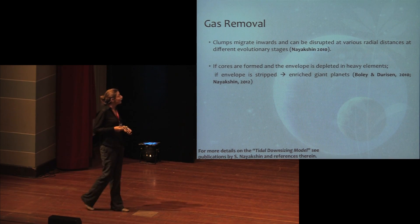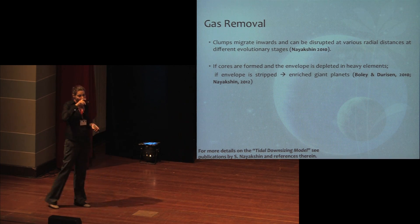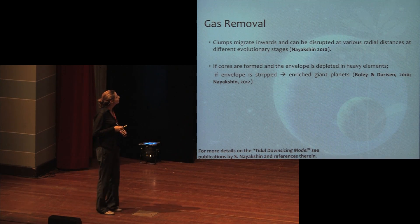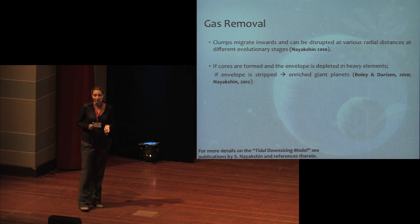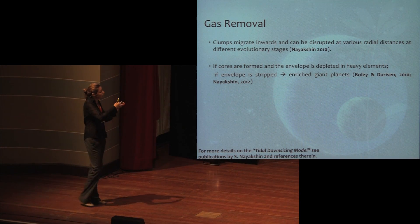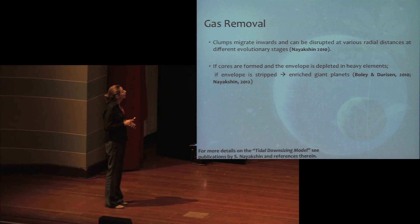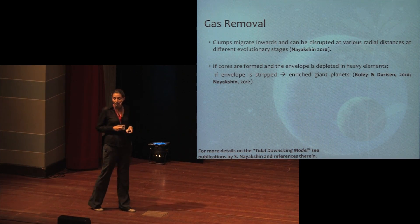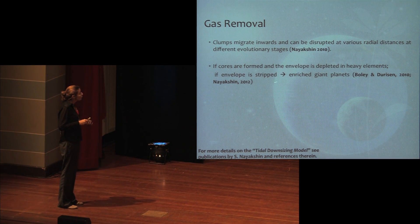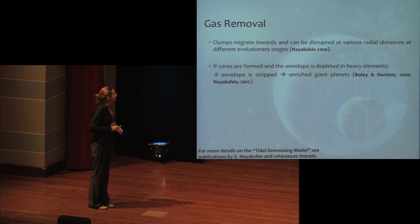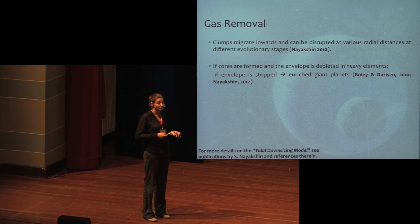Another enrichment mechanism in disk instability is gas removal: clumps migrating inward can lose some of their envelopes. If they manage to form a core during migration, the final planet will actually be enriched compared to the star, ending up with an enriched giant planet. See Boley, Durisen, and Nayakshin's papers for detailed descriptions of this mechanism.